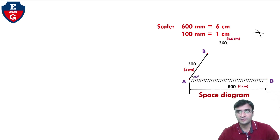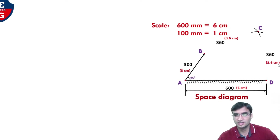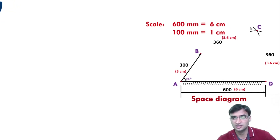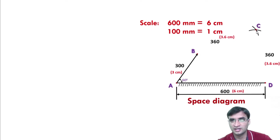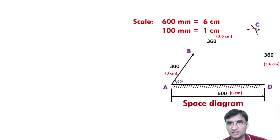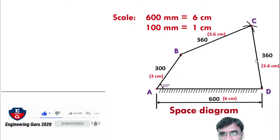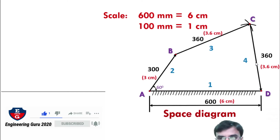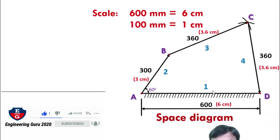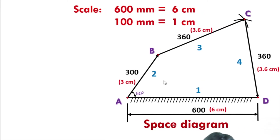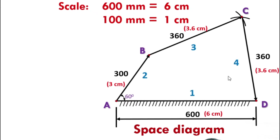The length of BC is given as 360 mm, so take one arc at 3.6 cm. CD is also given as 360 mm, so as per scale that length equals 3.6 cm. From D, take one arc; that will intersect at a point called point C. Join link BC and link CD. Our space diagram is ready. This is the fixed link — link 1, link 2 (crank), link 3, and link 4.